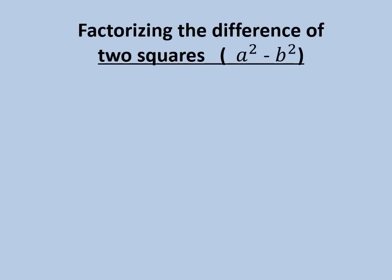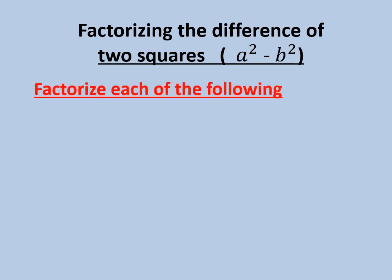Our lesson is about factorizing the difference of two squares, which means it is in the form a² minus b². The expression consists of two terms. Factorize each of the following: x² minus 25.